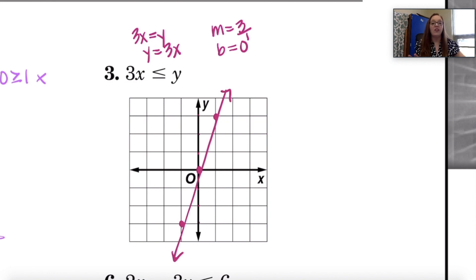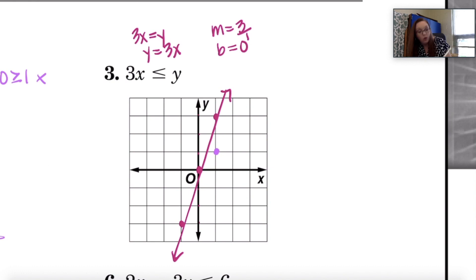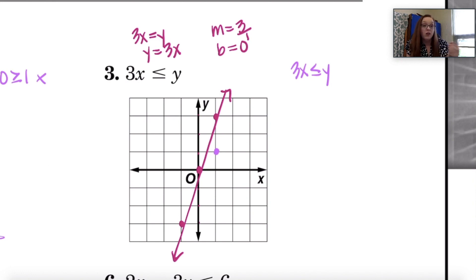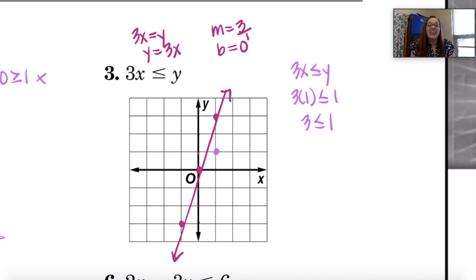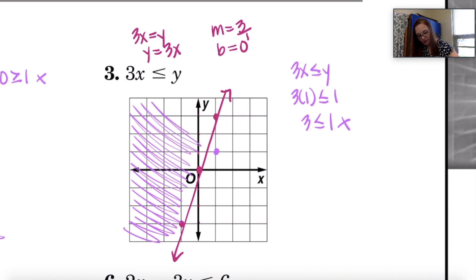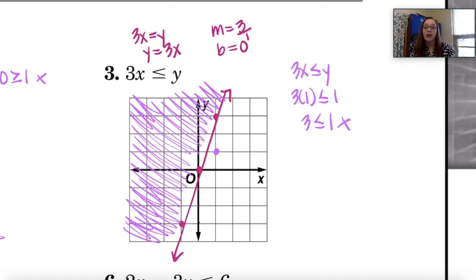If you stop right here without doing anything else, all you've done is graph an equation. We're graphing an inequality, so now we need to figure out which side to shade. I need to pick a point not on the line. I can't use (0, 0) because it is on the line, so I'm going to pick (1, 1). I substitute the X and Y coordinates into the original inequality: 3 times 1 — is that less than or equal to 1? 3 is not less than or equal to 1, so (1, 1) is not a solution. That means I'm not shading that side; I'm going to shade the opposite side. All points in that shaded section are solutions to the inequality 3X less than or equal to Y.